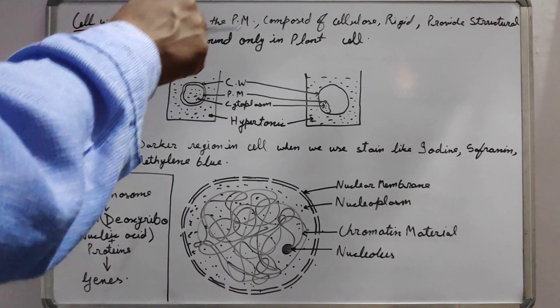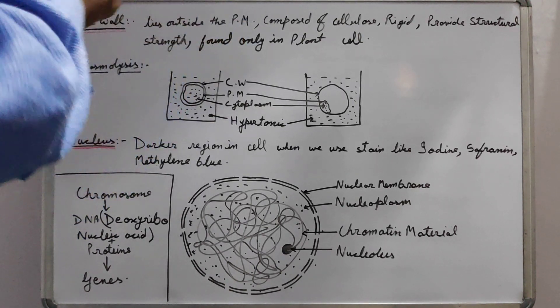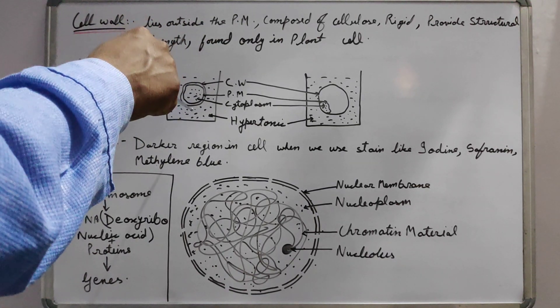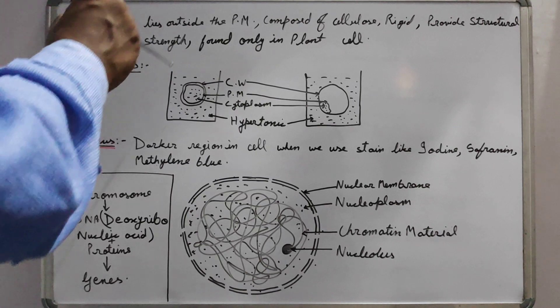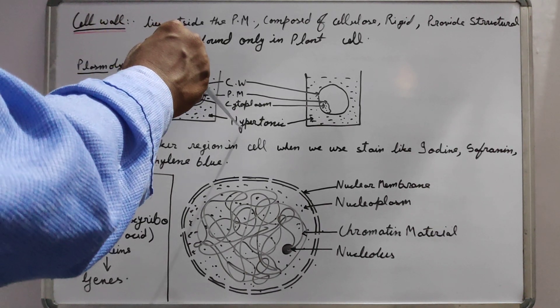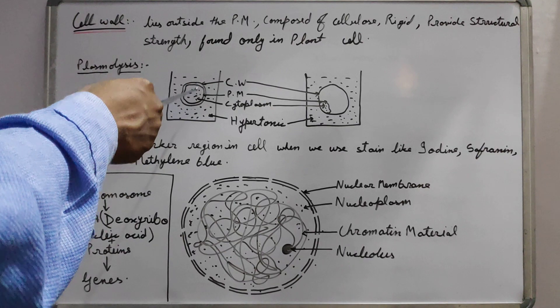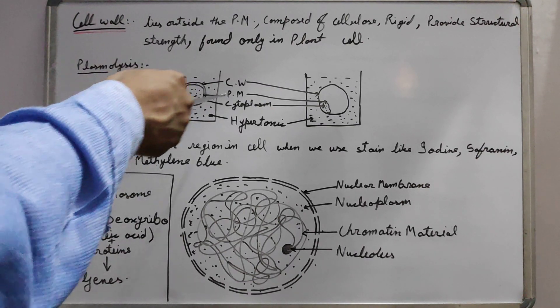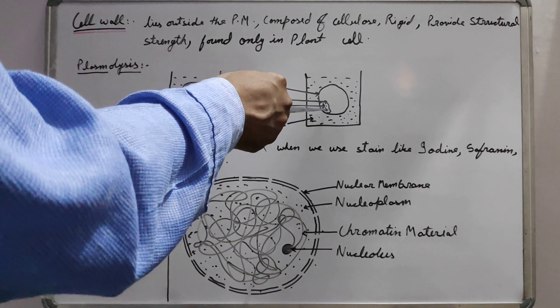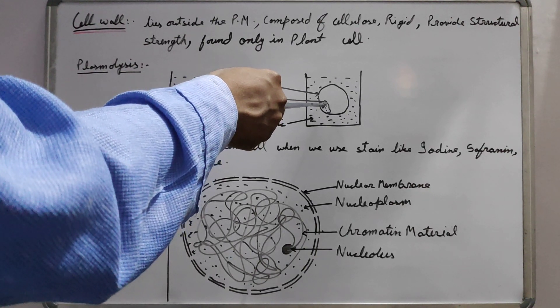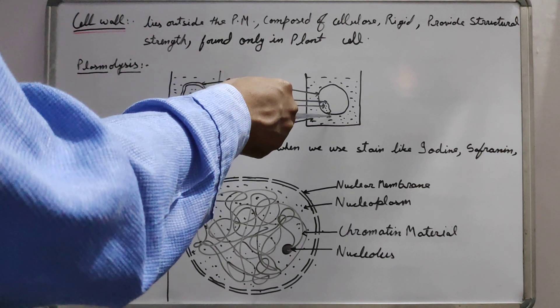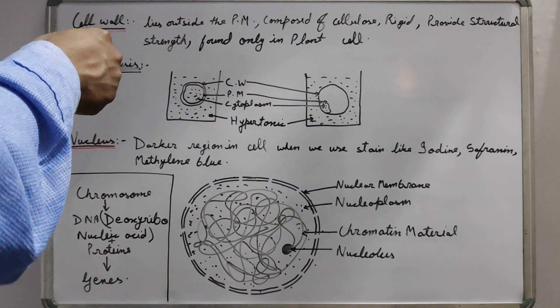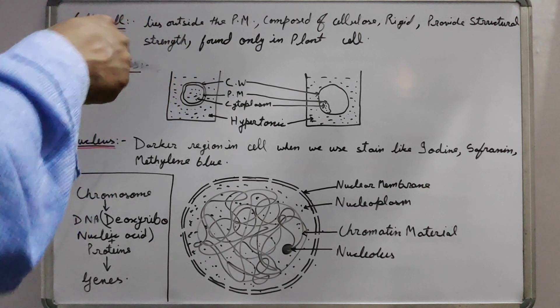Cell wall is the characteristic feature of any plant cell and due to this, one important feature plasmolysis can be seen in the plant cell. If we put the plant cell in any hypertonic solution, the cell will lose water due to exosmosis and the plasma membrane and cytoplasm will start shrinking and collect at the side of the cell wall. This phenomenon is known as plasmolysis and can be seen only in the plant cell.